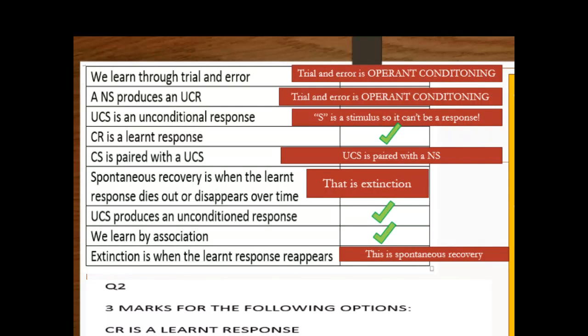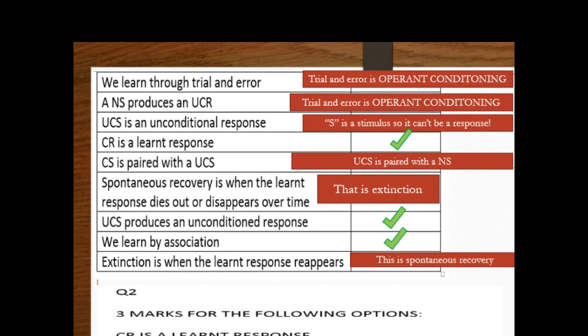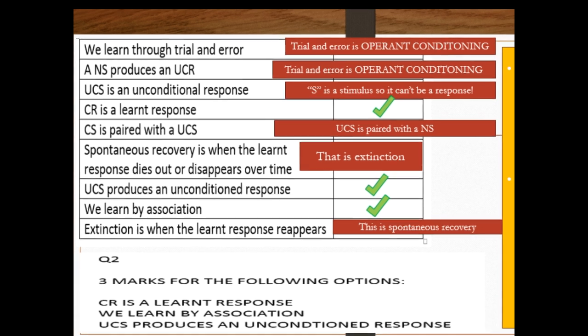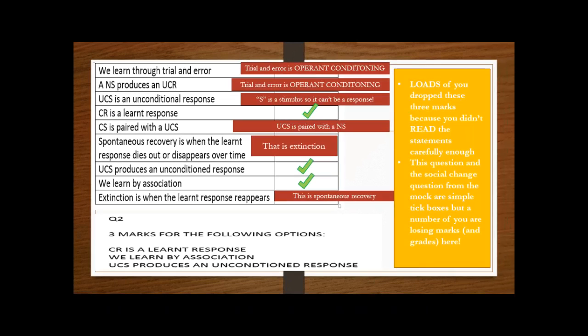Learning through trial and error is operant conditioning. A neutral stimulus produces an unconditioned response—no, an unconditioned stimulus. A neutral stimulus produces no response. A UCS is an unconditional response—the unconditional is wrong, also S is a stimulus, so it can't be a response. CS is paired with a UCS—no, UCS is paired with an NS during conditioning. And then extinction and spontaneous recovery were just the wrong way around purposely to kind of catch you out. So those statements, I know there's a lot going on there, but you should just really take the time to read those statements carefully because it should be three easy marks.